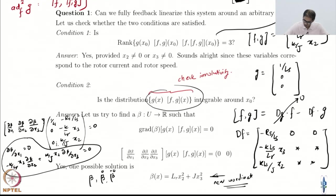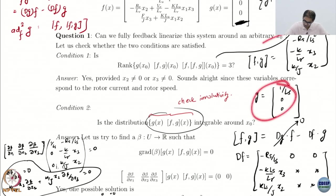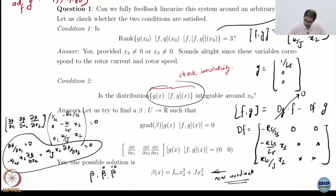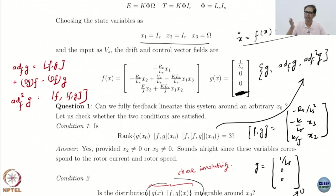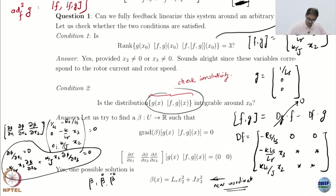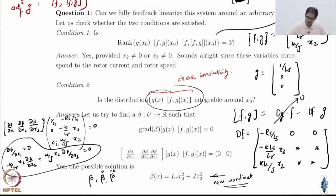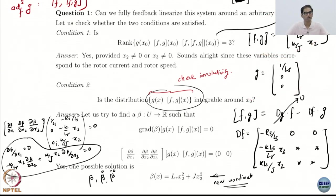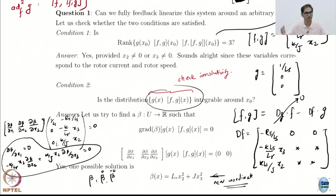I believe we were able to verify the linear independence — we did g, f g, and then ad_f² g was the complicated one. We said we will do some of this offline, or even numerically. The second condition was to check the involutivity of the distribution made by ad_f⁰ g, ad_f¹ g, all the way to ad_f^(n-2) g. In this case ad_f^(n-2) g is basically ad_f g, and we just need to check if this distribution is involutive.